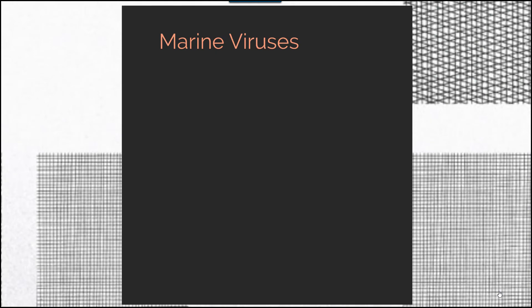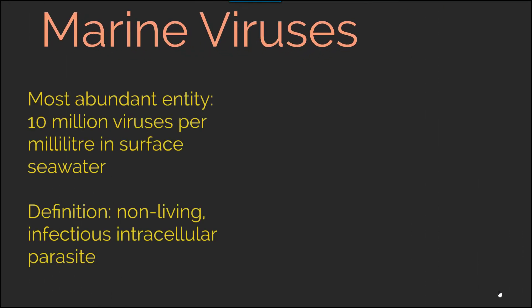Viruses are something we don't think about very frequently in terms of a marine environment, but of course the oceans have viruses. They are the most abundant entity, as there are 10 million viruses per milliliter in the surface seawater. The definition of a virus is a non-living infectious intracellular parasite.